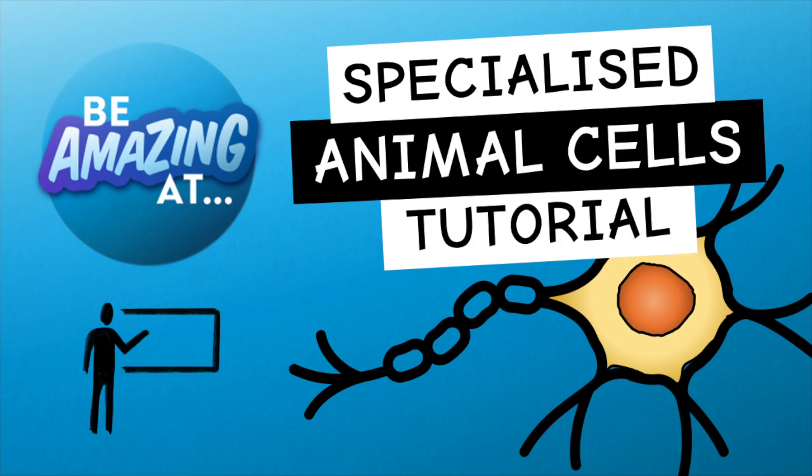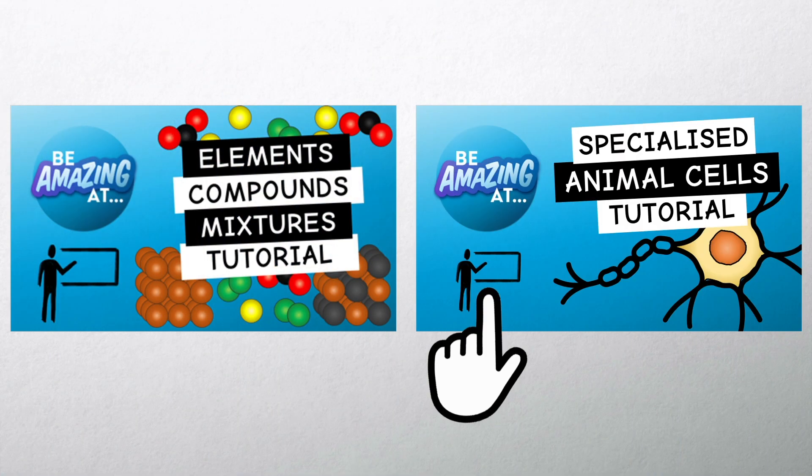Both plant and animal cells can become specialised to do a specific job. There is a separate video on this and there's a link in the description below.